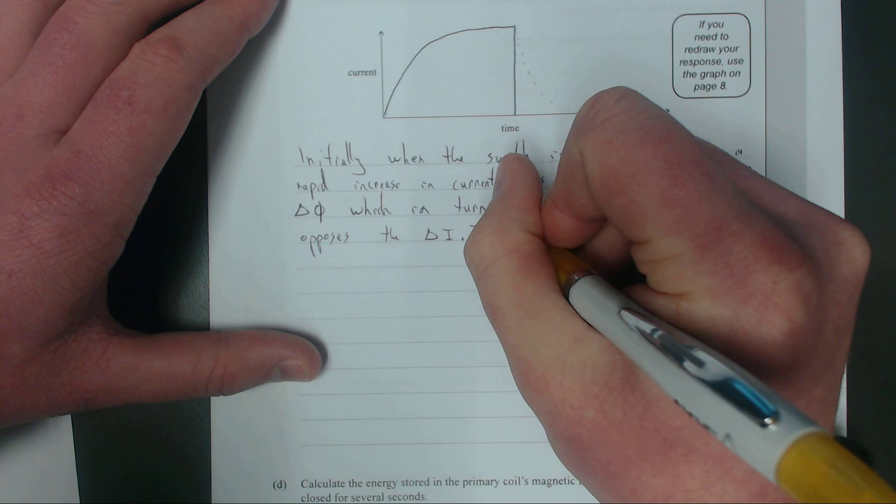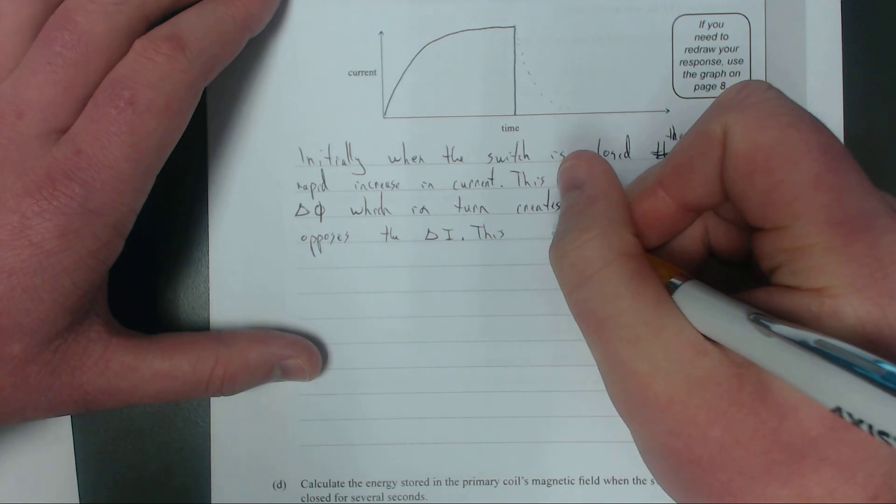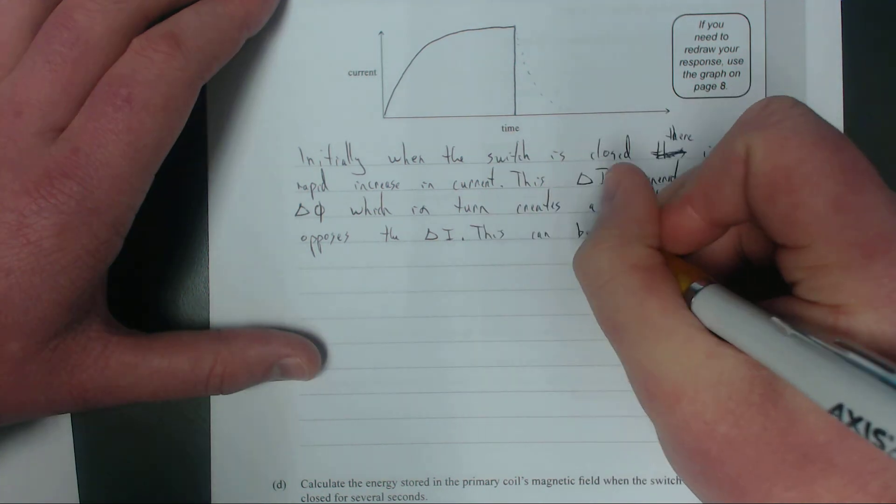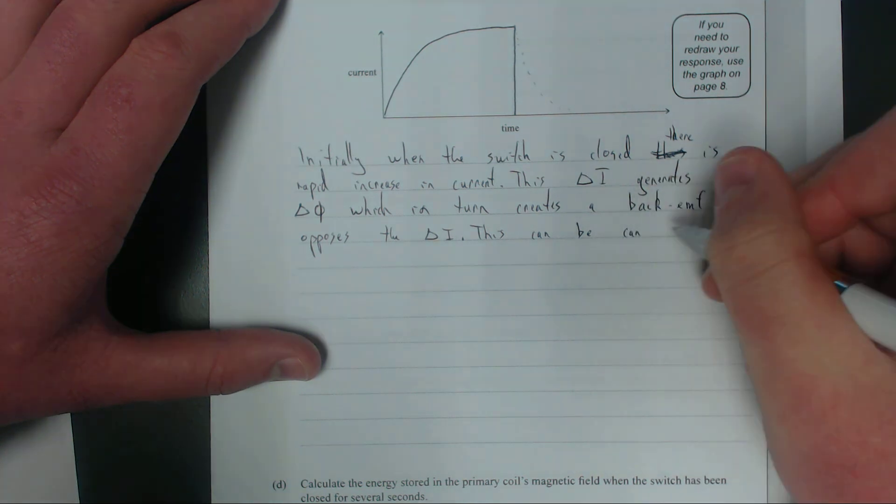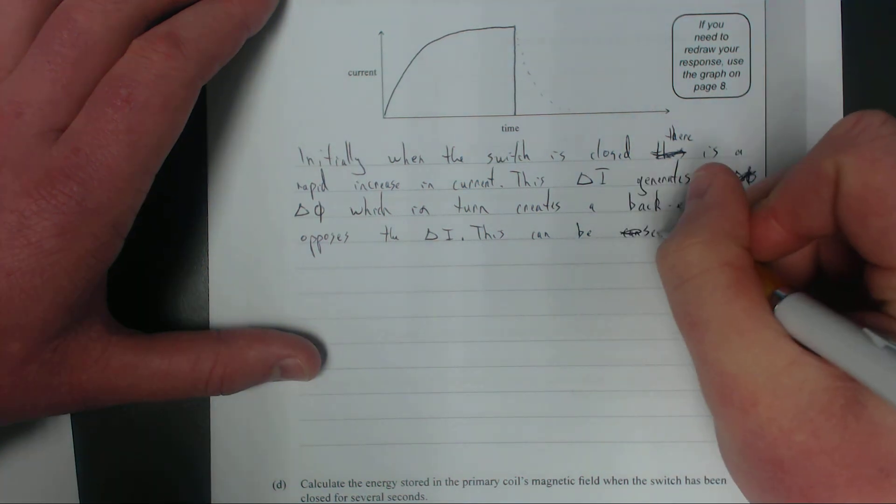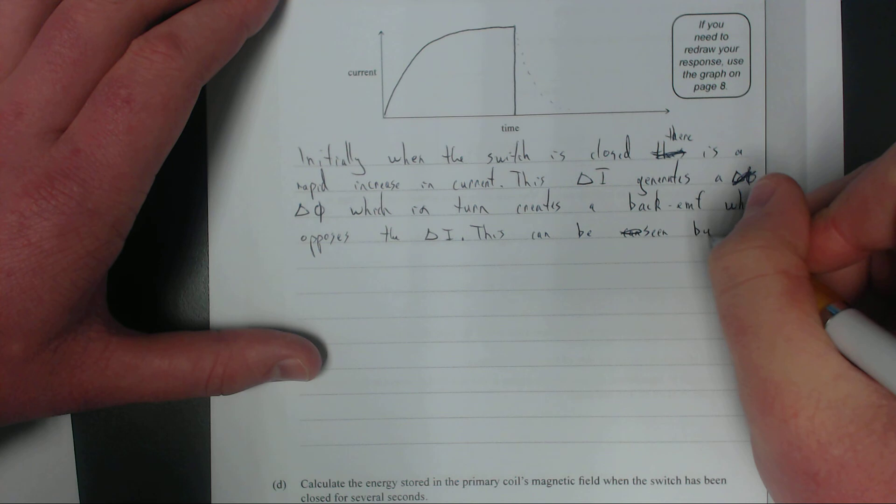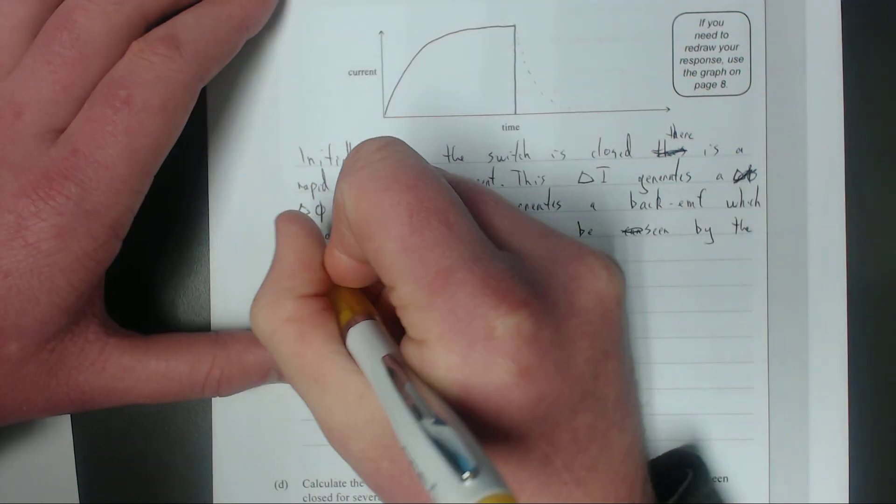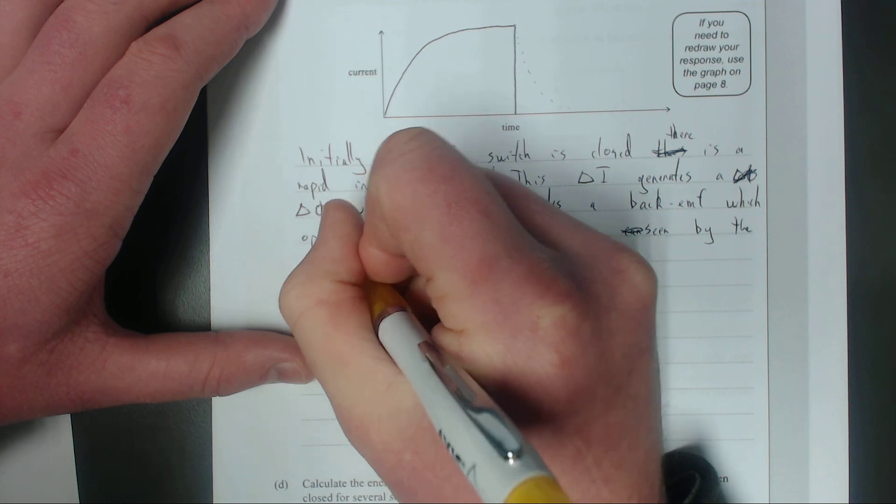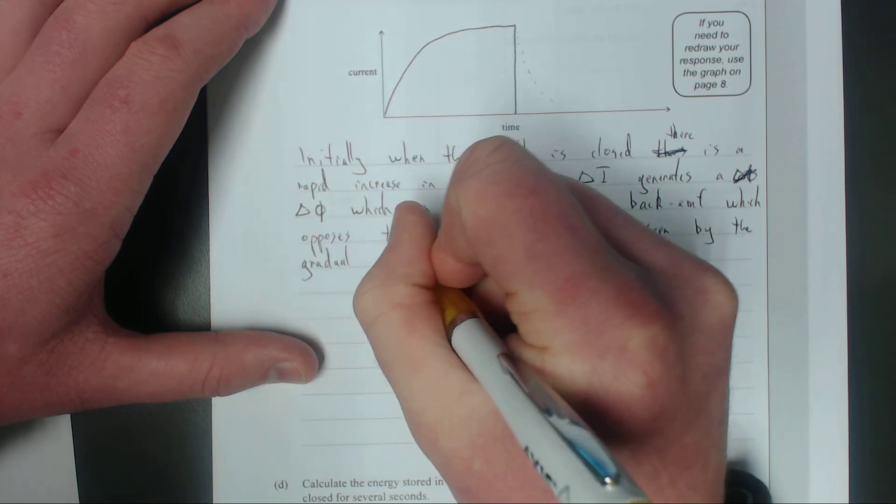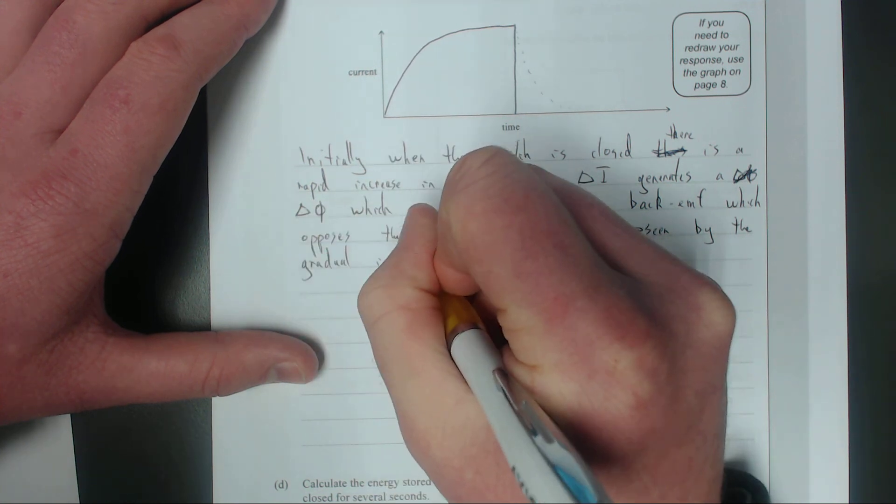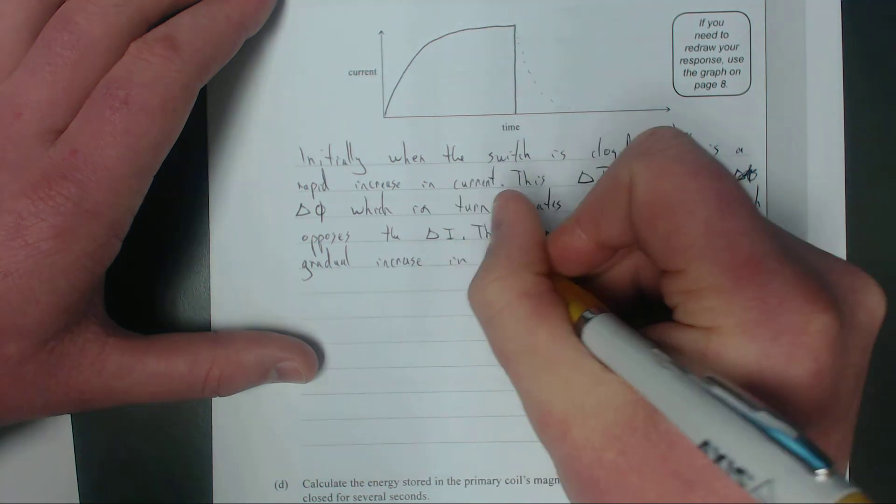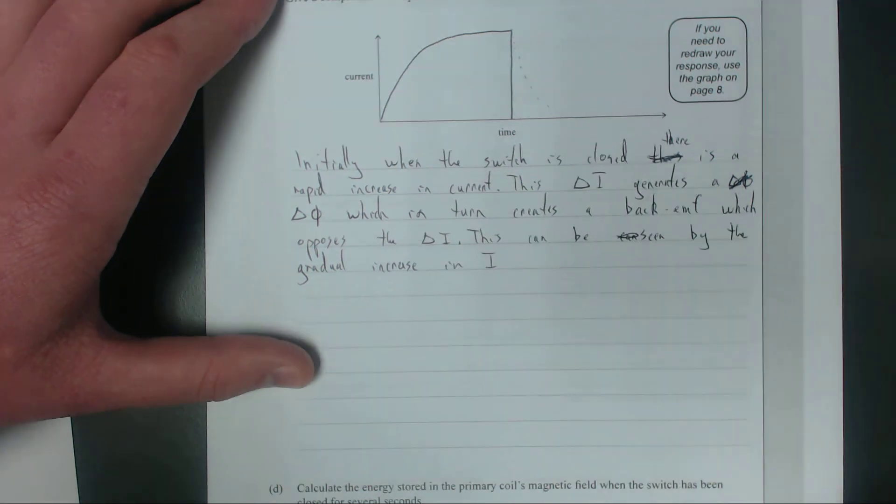This can be seen by the gradual increase in I. It would be a lot steeper if there wasn't an inductor.